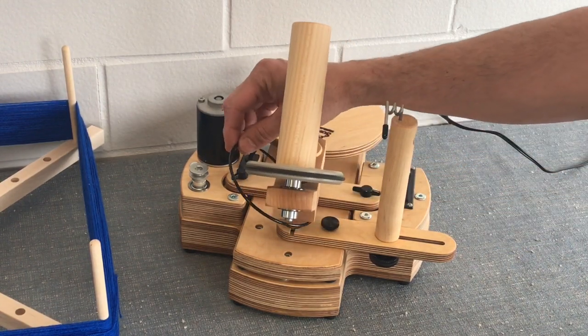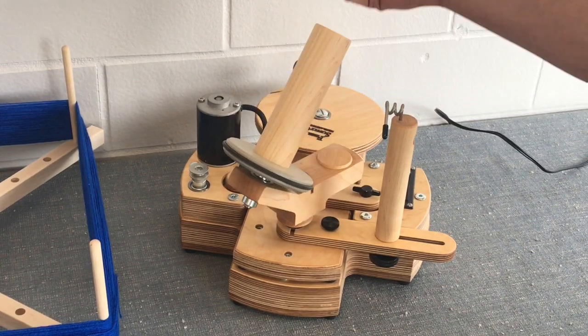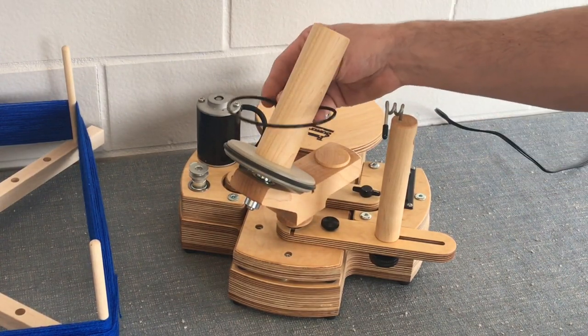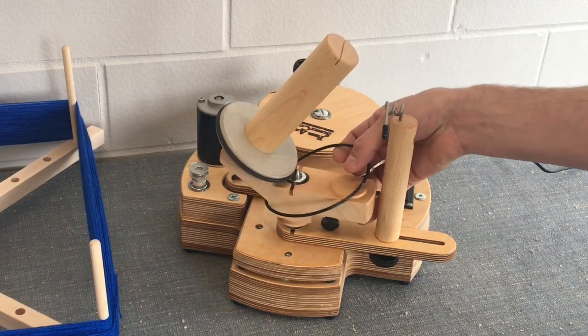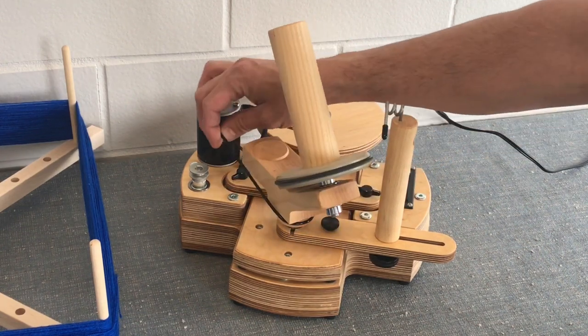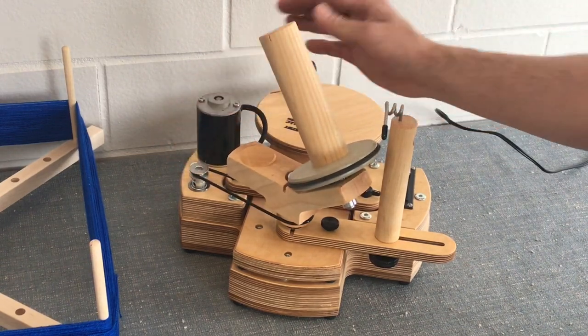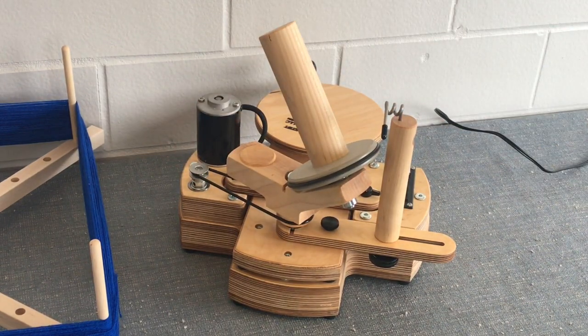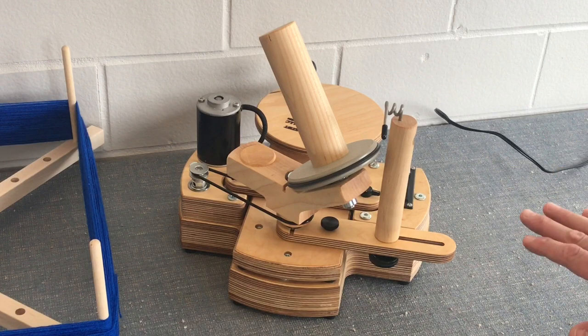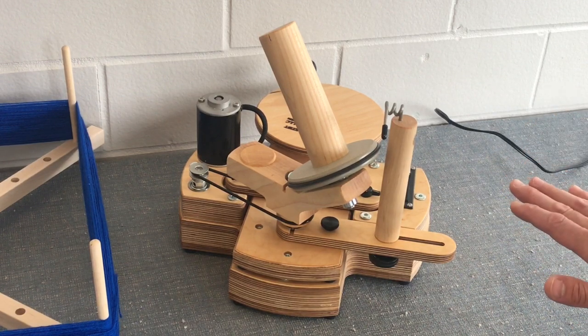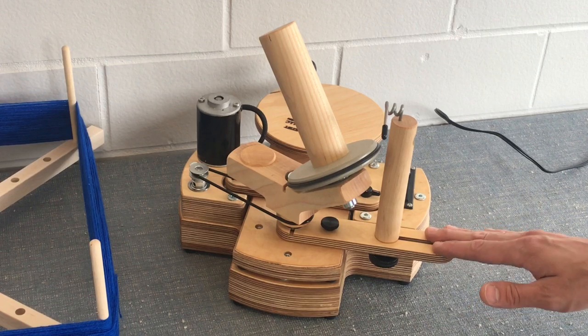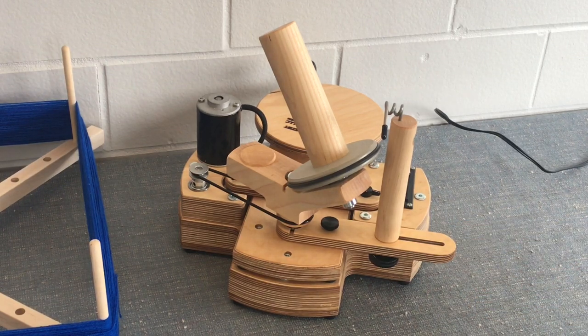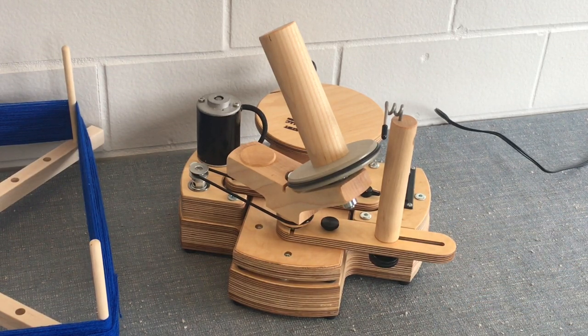Next you'll take this belt and place it over this bracket first and around the front here and around the pulley like that. So now you have the jumbo ballwinder attached to the jumbo ballwinder Powerbase with the yarn guide positioned correctly, and you're ready to connect the unit to power and start winding yarn.